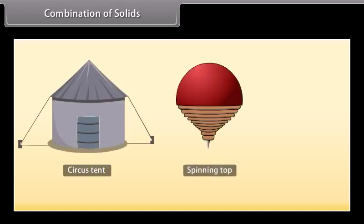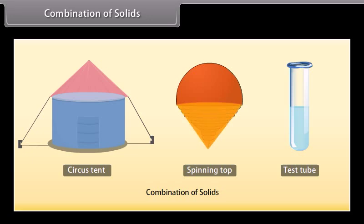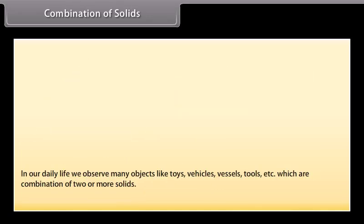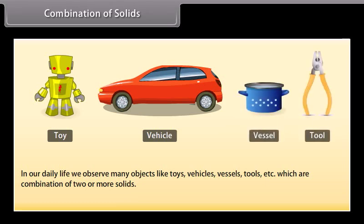Students, look at these solids. These solids are made up of two or more solids. A circus tent is a combination of a cone and a cylinder. A spinning top is a combination of a hemisphere and a cone. And the test tube is a combination of a hemisphere and a cylinder. In the same way, in our daily life we observe many objects like toys, vehicles, vessels, tools, etc., which are a combination of two or more solids. Let's learn to find their surface areas and volumes.